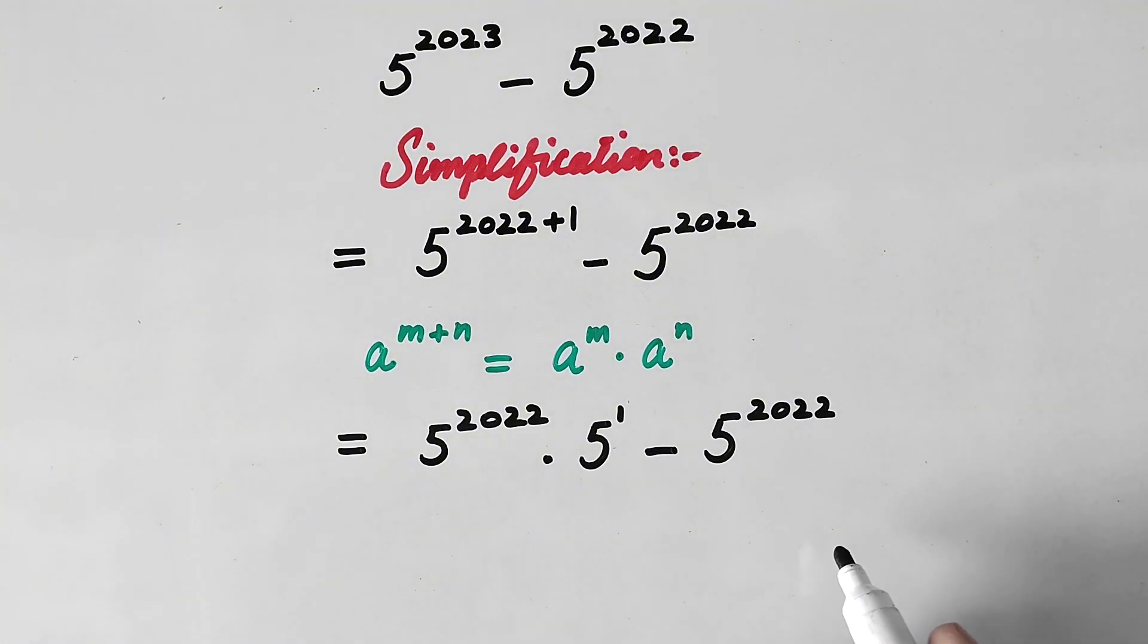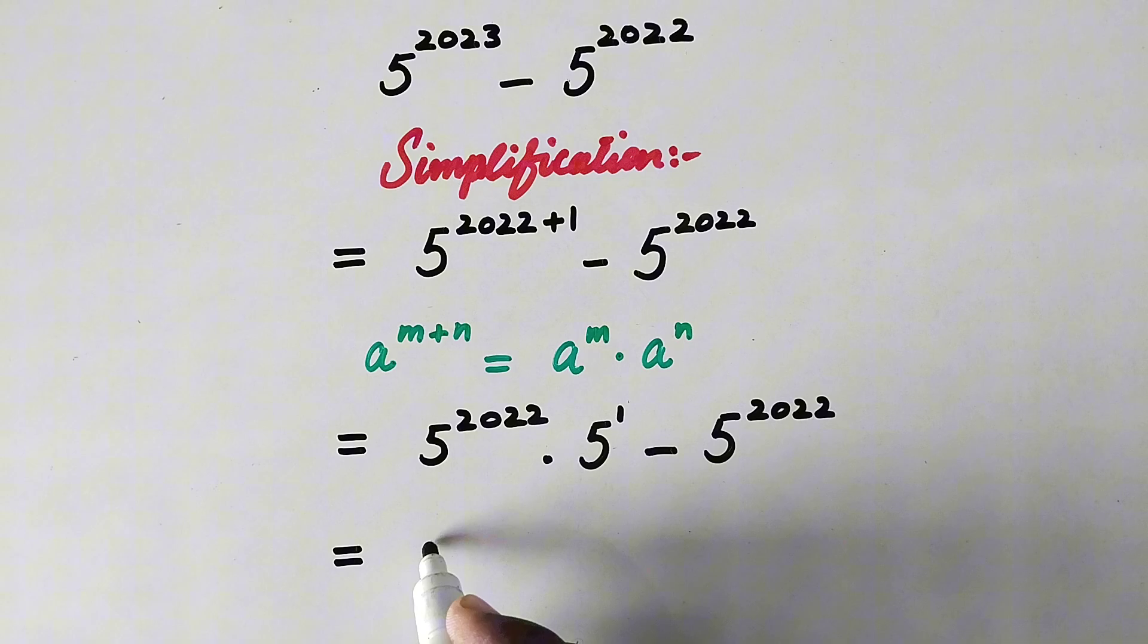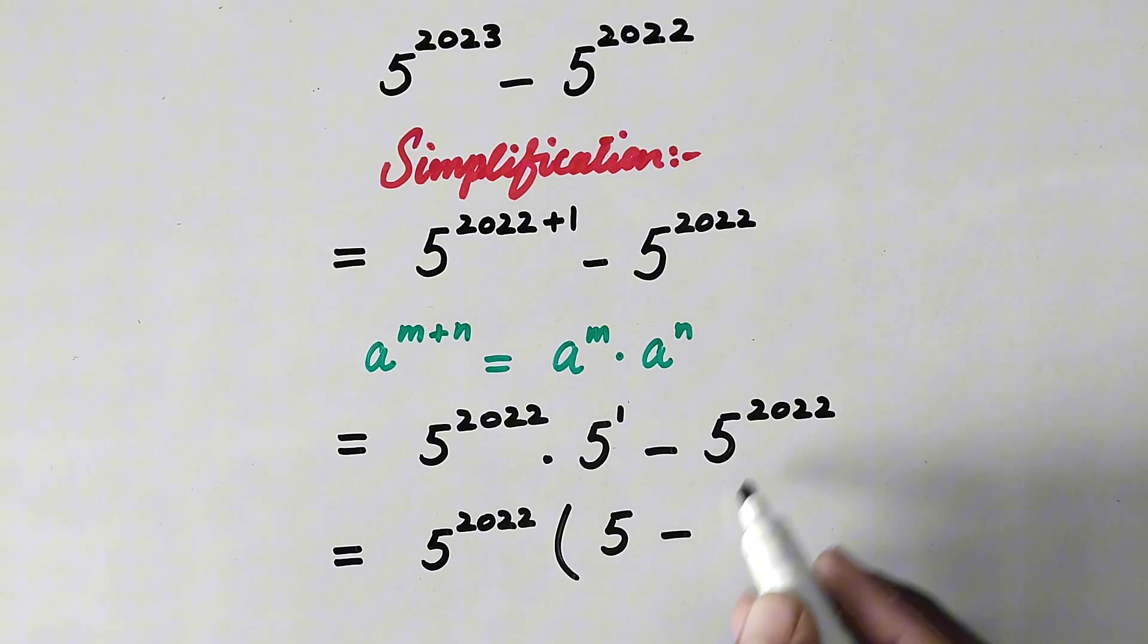So now this will be equal to, as we can see that this 5 raised power 2022 is repeating, so we will take it out as common factor. So here is 5 raised power 2022 bracket, here left will be 5 minus here left will be 1.